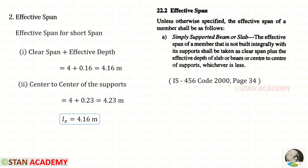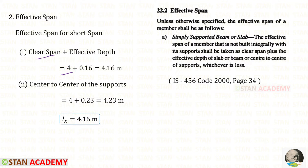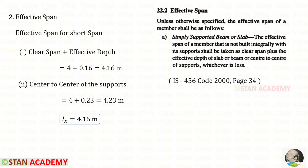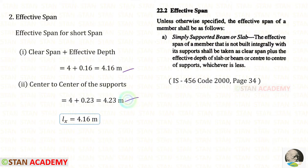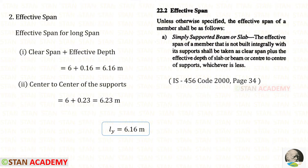Now we find the effective span. From codebook page 34, the effective span is the minimum of: clear span plus effective depth, or center-to-center of supports. For the short span: clear span 4 m + d 0.16 m = 4.16 m; center-to-center = 4 + 0.23 = 4.23 m. Minimum is 4.16 m. Similarly, the effective span for the long side is 6.16 meter.